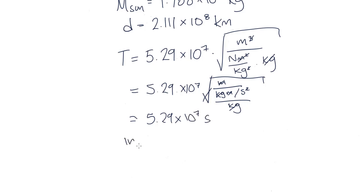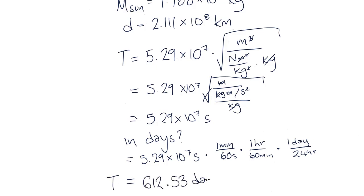What is this in days? If we multiply our answer in seconds by 1 minute over 60 seconds, which is the same as multiplying it by 1, and we multiply that by 1 hour over 60 minutes, and we multiply that by 1 day over 24 hours, we can convert it into days. Plugging this in, we get an answer of T equal to 612.53 days.